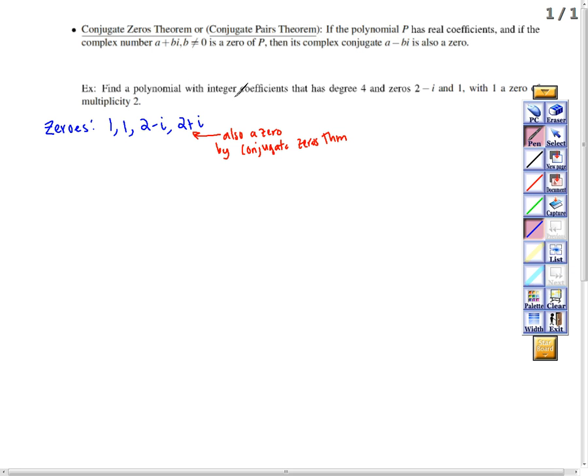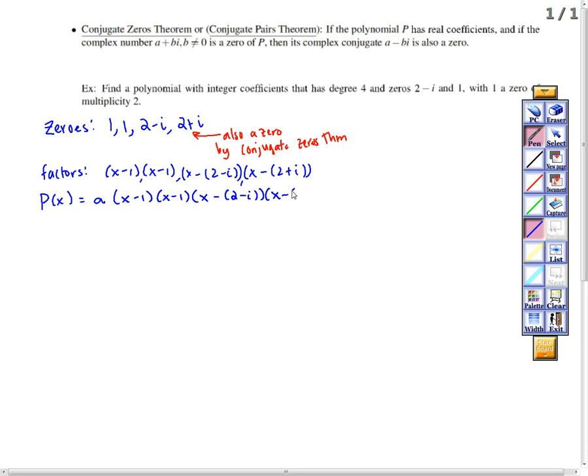So we want a polynomial that has integer coefficients and these four zeros. So my polynomial looks like a times all of these factors. Remember, if these are the zeros, my factors are x minus 1, x minus 1, x minus 2 minus i, and x minus 2 plus i. So if I want to write my polynomial, I just multiply all of these factors together, and I'm also multiplying by a. This is a times x minus 1 times x minus 1 times x minus 2 minus i times x minus 2 plus i.